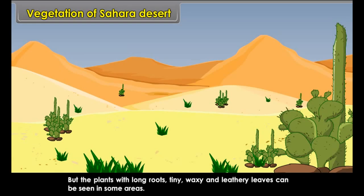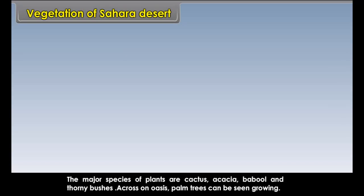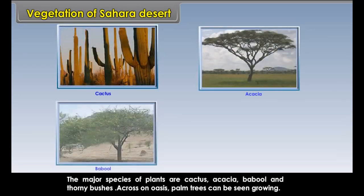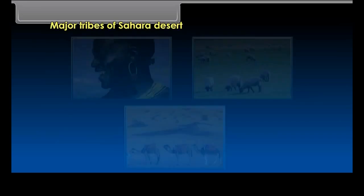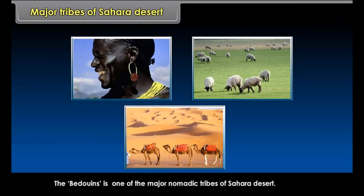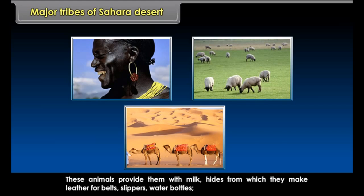The hot and dry climate conditions are not conducive to the rich growth of vegetation. But plants with long roots, tiny, waxy and leathery leaves can be seen in some areas. The major species of plants are cactus, acacia, babool and thorny bushes. Across an oasis, palm trees can be seen growing. The plants have thick bark and short needle-like leaves to preserve water and to avoid transpiration.